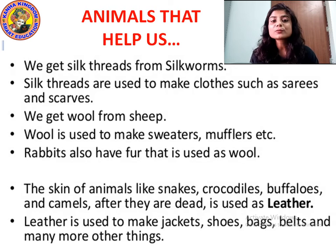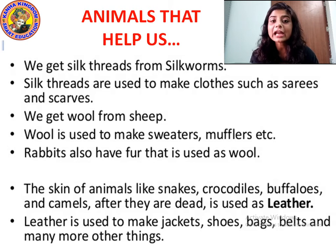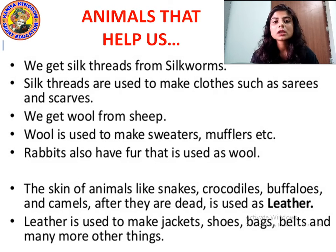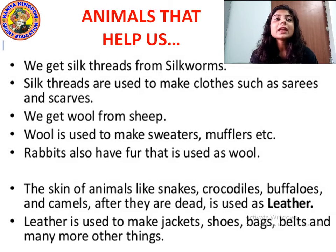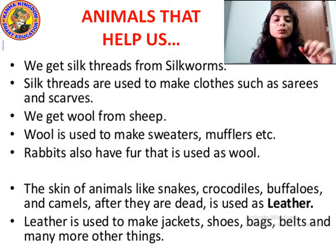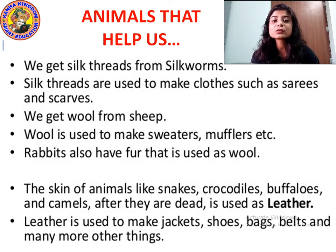We get wool from sheep. The sweaters and mufflers that we wear in winter are made from wool. We get wool from sheep — the fur of the sheep is shaped and then made into wool. That is why sheep are domesticated. We use wool to make sweaters, mufflers, woolen socks, and woolen jackets. This wool is obtained from sheep.